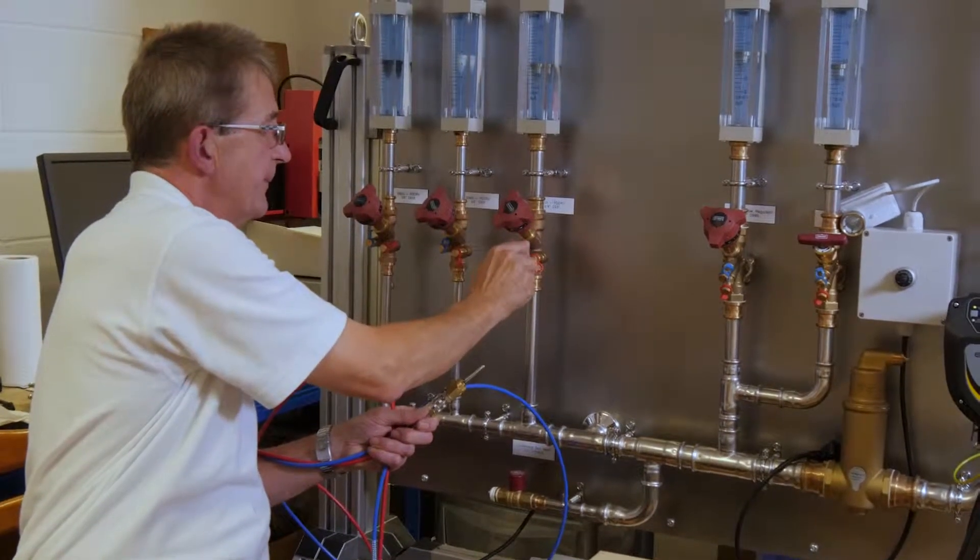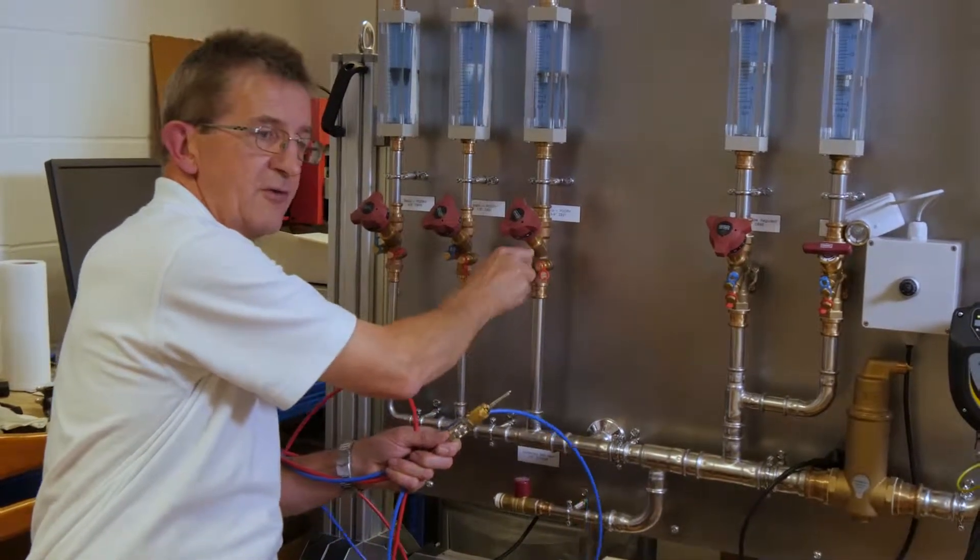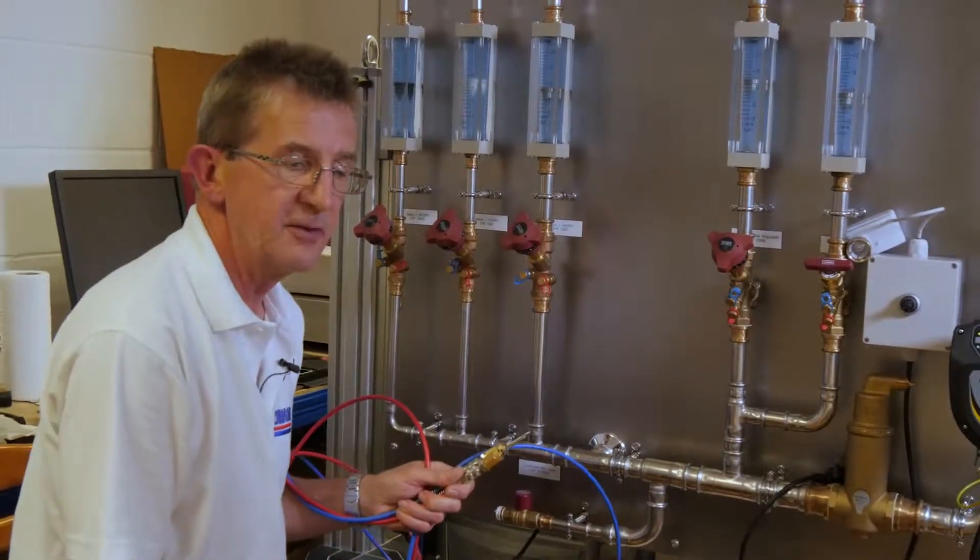And once that's done we can then move on to the next valve for commissioning. So hopefully today with this short video we've been able to show you how easy it is simply by following the nine stages shown on the front of every AC6. How to connect, disconnect, take a differential pressure reading and measure flow rate through a balancing valve.